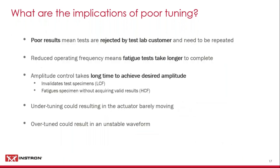To summarize: if you have poor results they might get rejected by the customer and you'll have to redo them. If you have to reduce test frequency because you can't reach load amplitude, everything takes longer. If you're taking a long time to reach amplitude using these different control techniques, it could either invalidate your test or you're fatiguing your sample before acquiring any relevant data. If you undertune you get a very sluggish response from your machine; if you overtune you get the opposite — dancing up and down as it tries to stabilize.